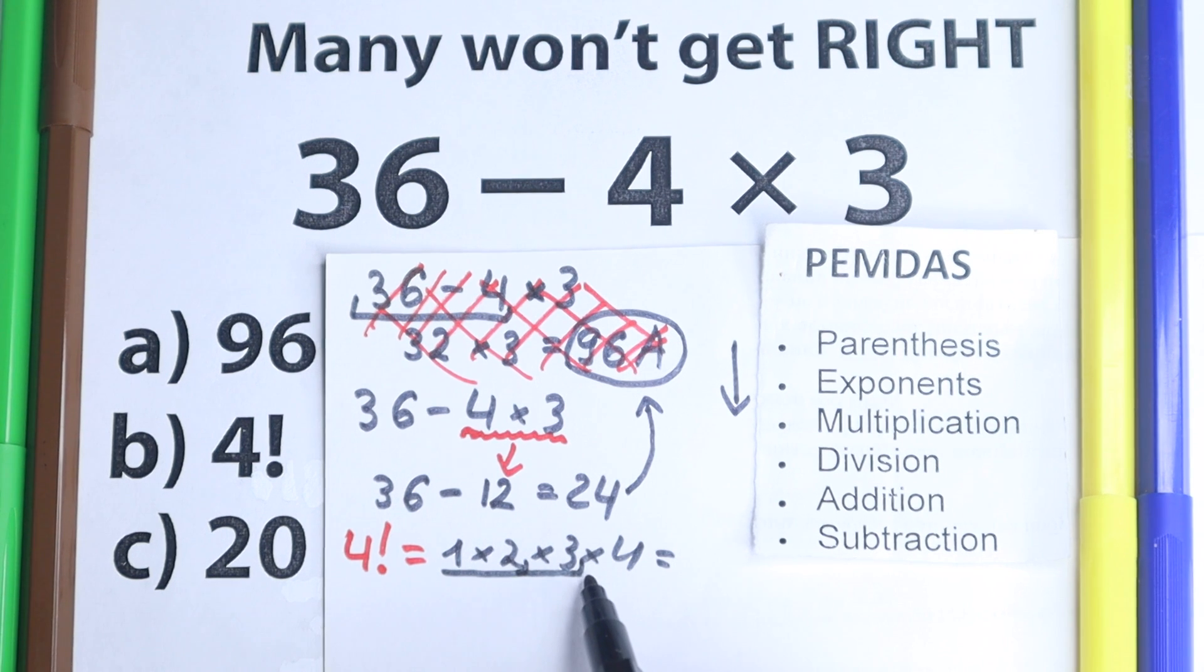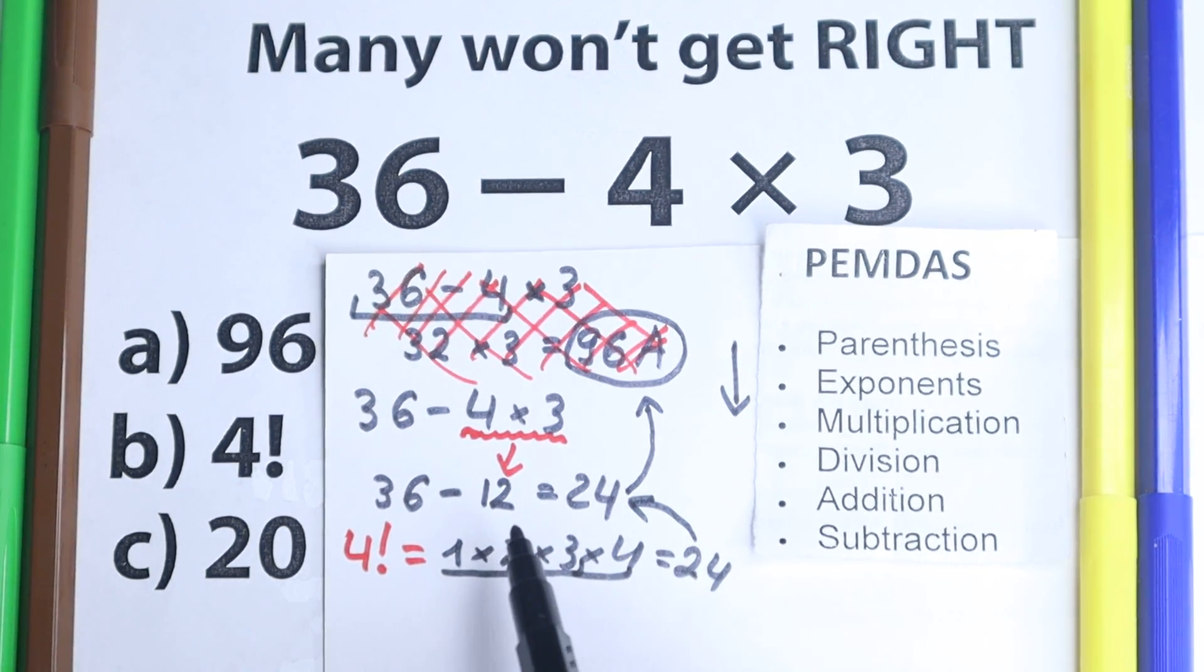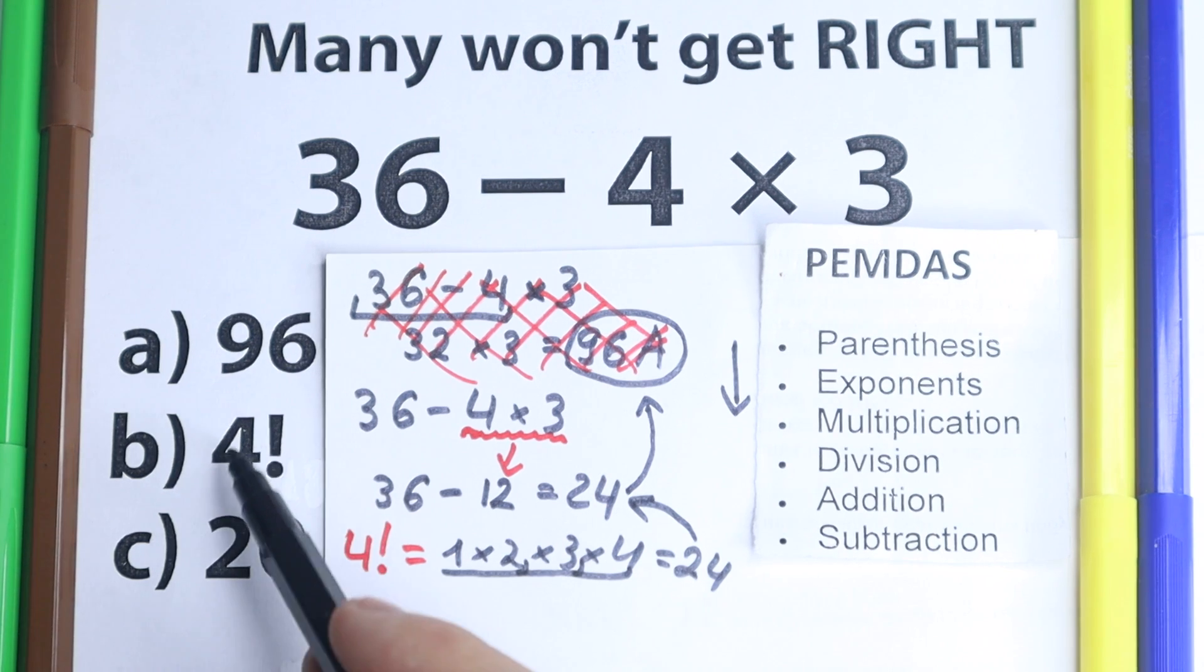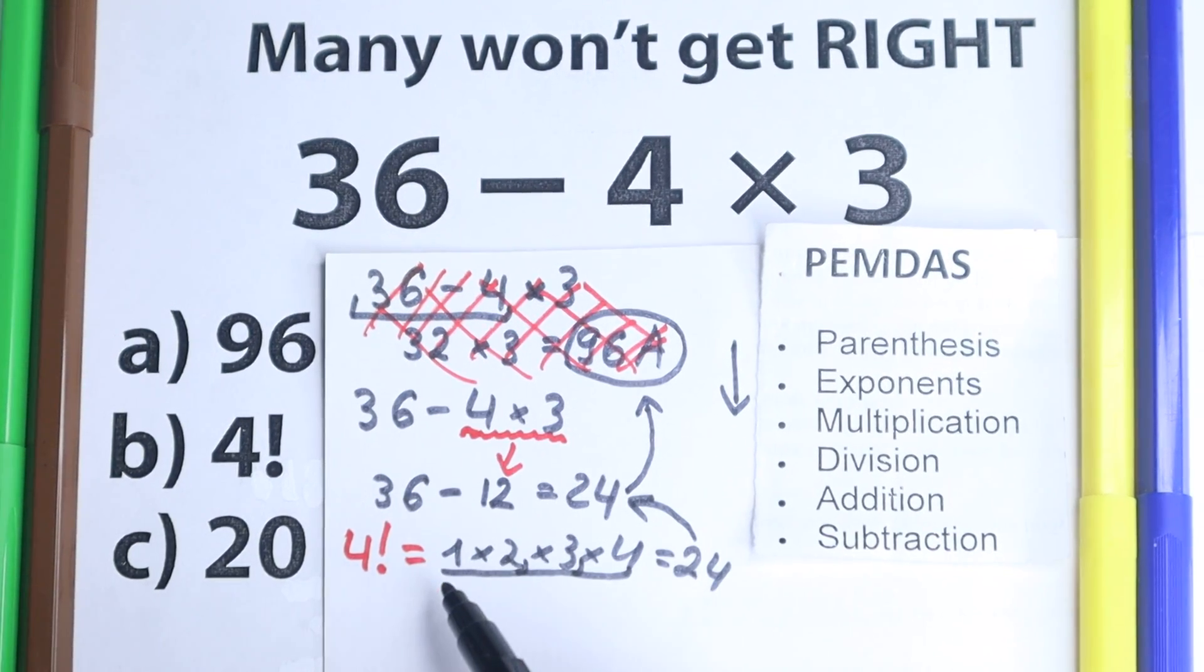Equal to 1 times 2, we have 2, 2 times 3 is 6, 6 times 4, this is equal to 24, so our 4 factorial is the same 24 as right here. So a correct answer, if we rewrite this 4 factorial as 24, a correct answer according to PEMDAS, and according to solution, according to factorials, equal to 24, and this is option B is a correct answer to this problem.